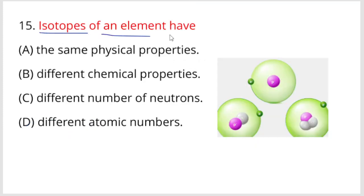Next, isotopes of an element have which property? Looking at the options, isotopes have different number of neutrons. Option C is the right answer. Different number of neutrons.